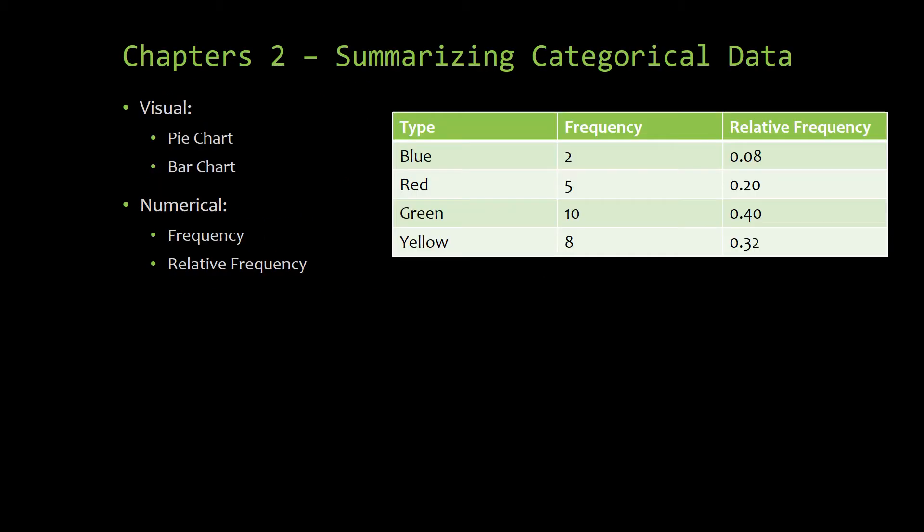Once we knew what data types are, we started down the journey of how can I organize categorical data in a useful way? We came up with two ways of summarizing that: numerical and visual. We have two different types of charts. I remember these because chart starts with a C, and so does categorical. Those are tables showing frequency or relative frequency.